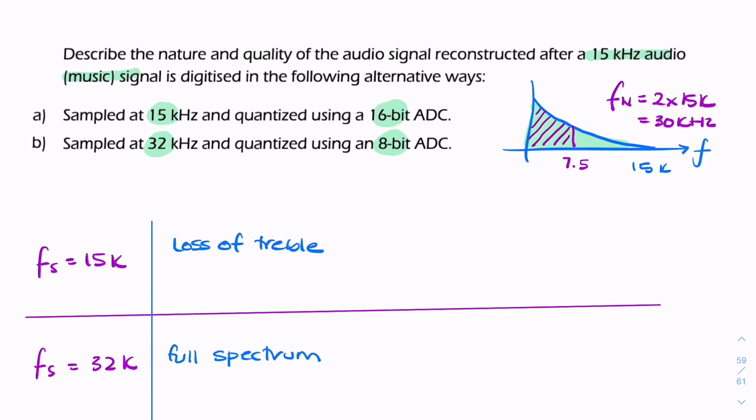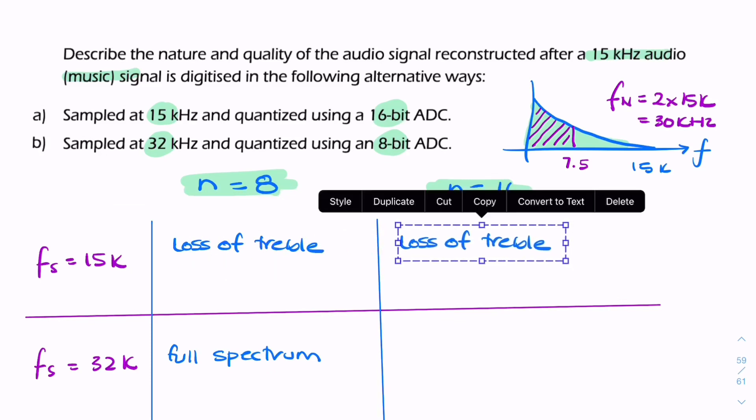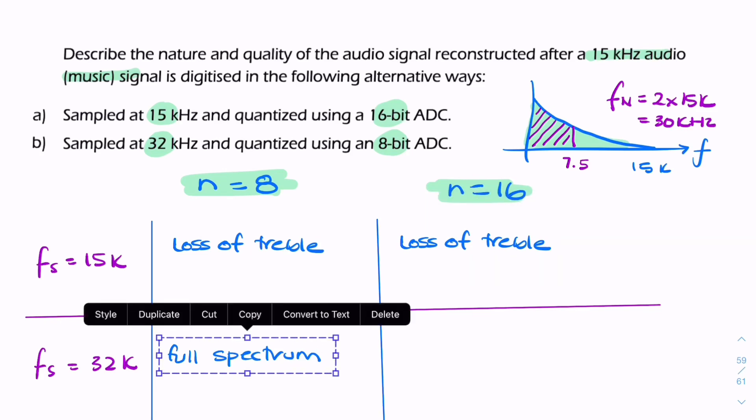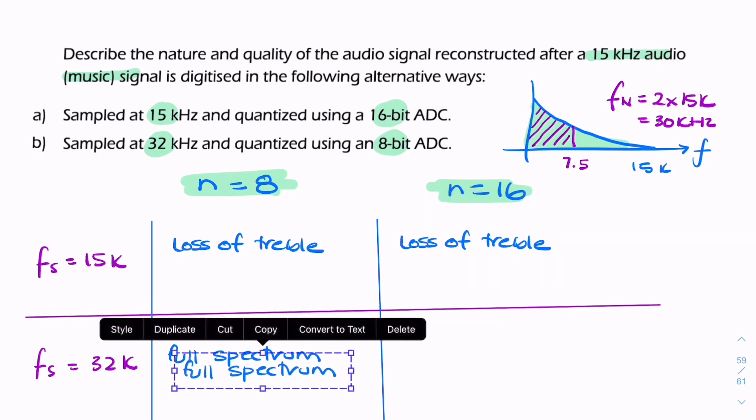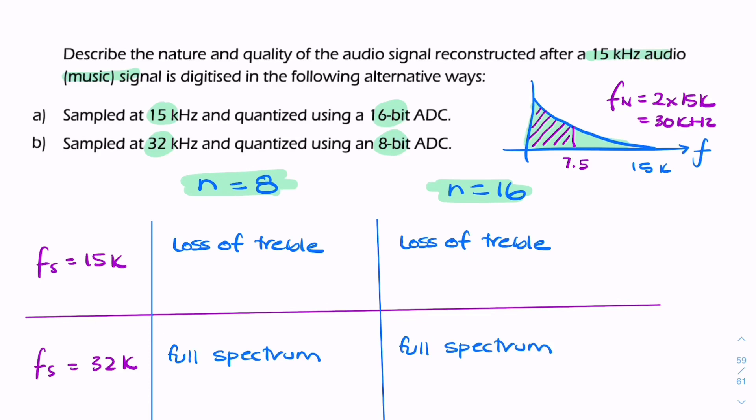Now let me turn this into a table where we look at bit depth. Here n equals 8, and here n equals 16. Regardless of the bit depth, if we're sampling at 15k, we'll always lose the treble, and we'll always get the full spectrum if we're sampling at 32k.